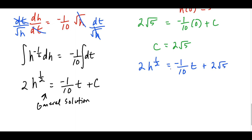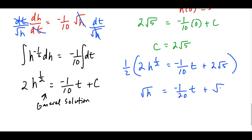To solve for h, we multiply both sides by 1/2, canceling the 2. This gives √h equals negative 1 over 20 times t plus √5. Then squaring both sides yields the final answer: h equals the quantity (negative 1 over 20 times t plus √5) squared.